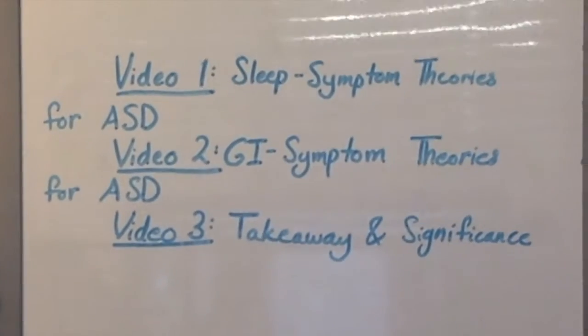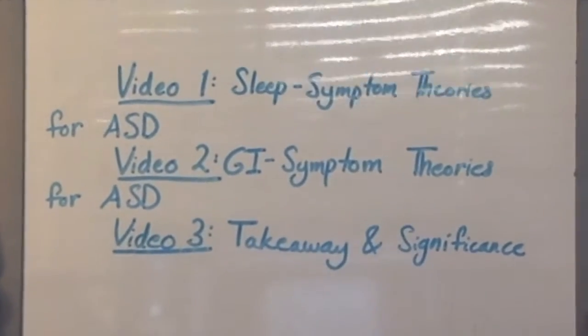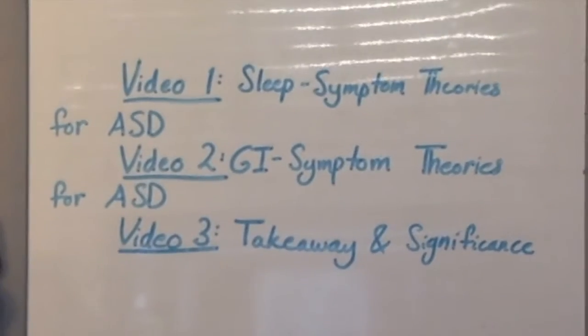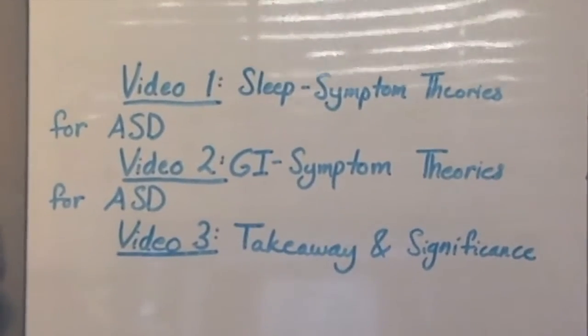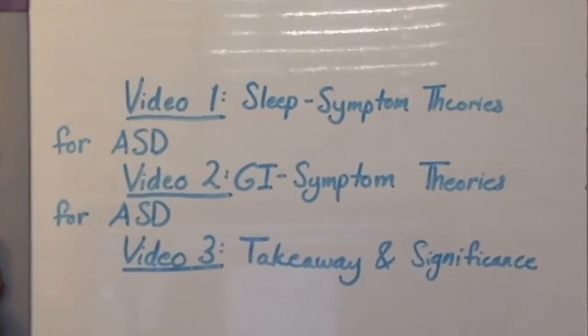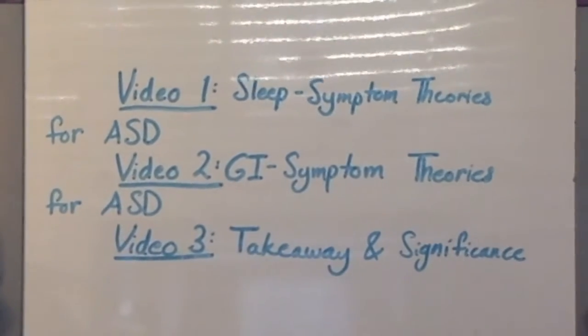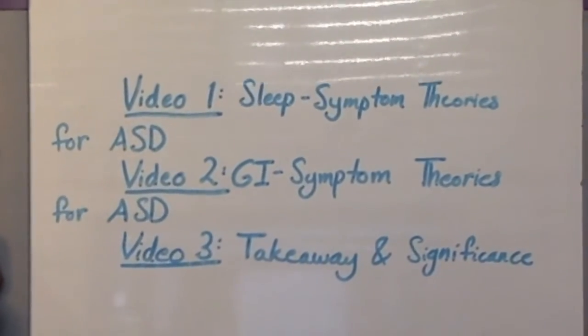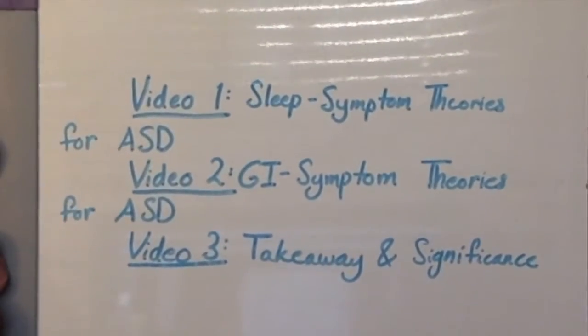I will compare the symptom theories to both normative gastrointestinal and sleep functions, and autism etiology as proposed by research. My sequence for delving into these theories will go along these lines: first, we'll discuss sleep symptom theories for ASD; second, the GI symptom theories for ASD; and finally, the last video will be the takeaway and significance of this sort of research, and why I'm doing this project in the first place.